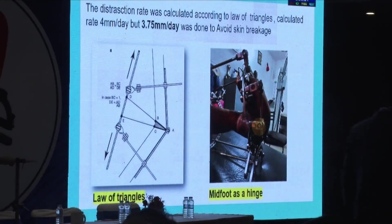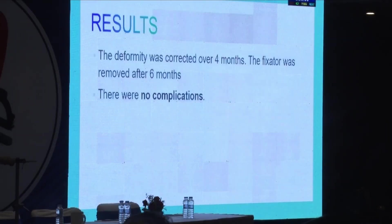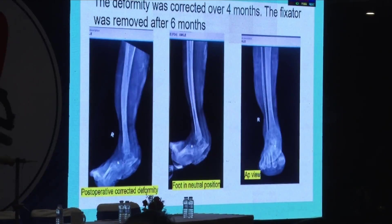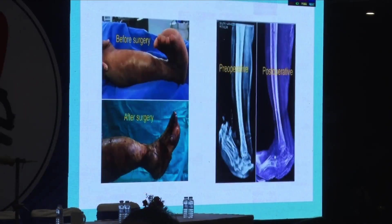The critical point was the dorsum of the skin. We have to calculate according to the law of triangles — where to put the hinge and how to calculate the distraction. Here I have shown the mid-foot hinge placement. With this technique, the deformity was completely corrected at four months, and an additional two months were given as a latent period for the soft tissue to settle. This is the final X-ray picture.